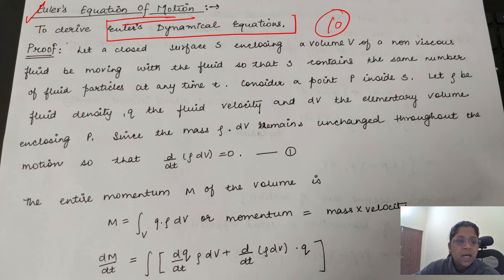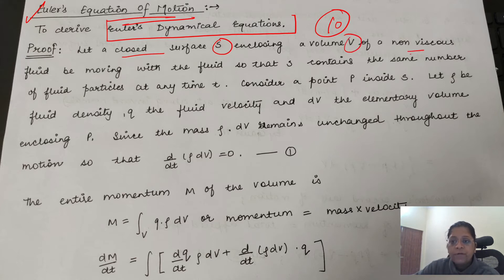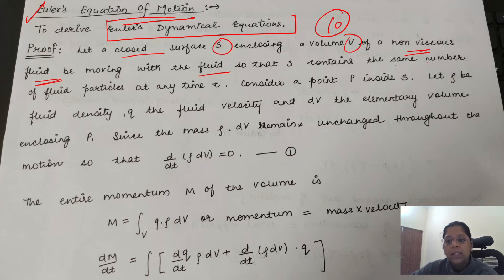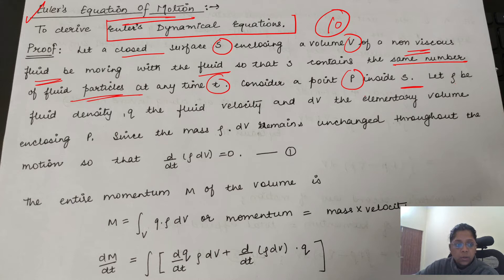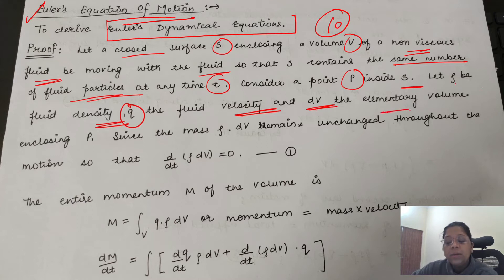Let a closed surface S enclosing a volume V of a non-viscous fluid be moving with the fluid, so that S contains the same number of fluid particles at any time t. Consider a point P inside S. Let ρ be the fluid density, q the fluid velocity, dV the elementary volume enclosing P.